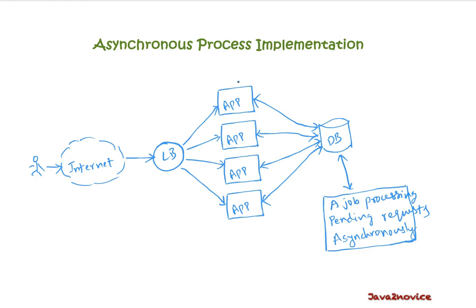Now let's discuss how to implement asynchronous processing in an application. These bunch of servers accept requests from users, store them into the database, and respond back immediately. An asynchronous job, running as an independent service, reads all open requests from the database and starts processing them one by one sequentially. This is one way of processing pending requests asynchronously and is a best fit for a small-scale application.